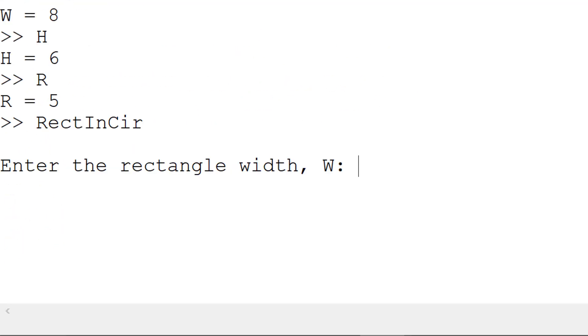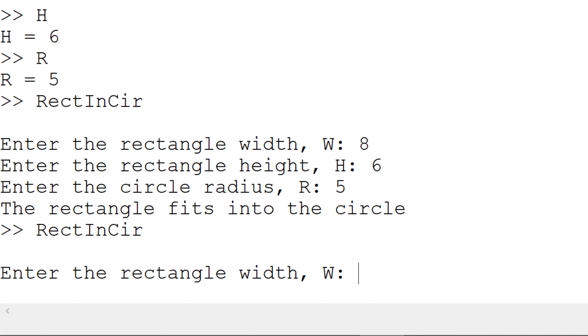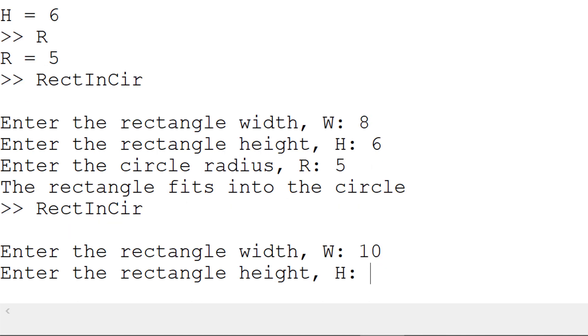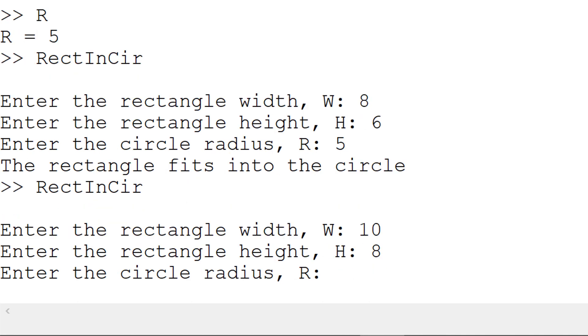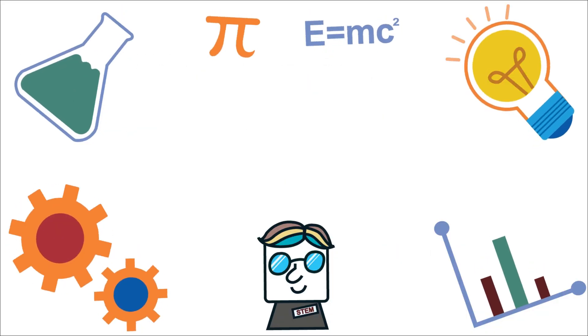Now you can run the script and use W equal to 8, H equal to 6, R equal to 5 to see if it shows the text 'the rectangle fits into the circle'. Now you can also type W equal to 10, H equal to 8, R equal to 5 to see 'the rectangle does not fit into the circle'.